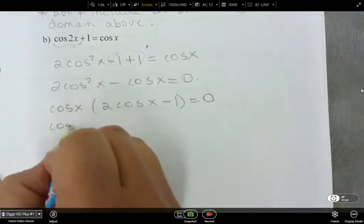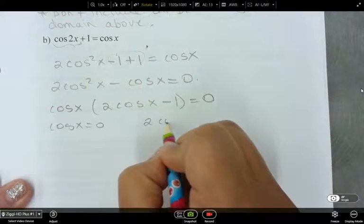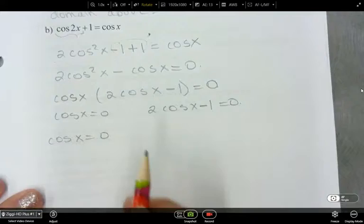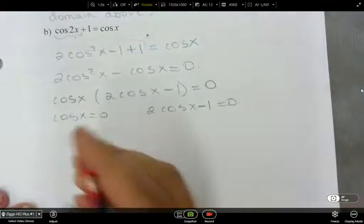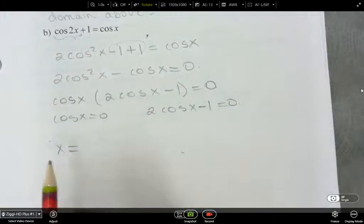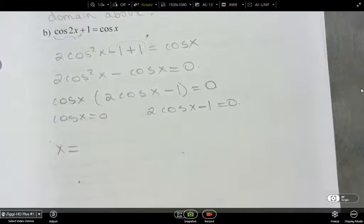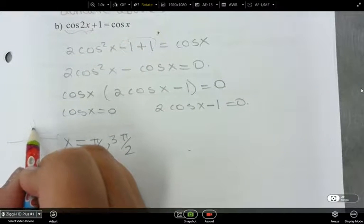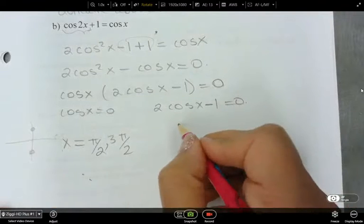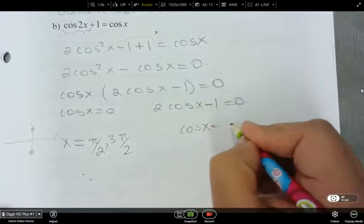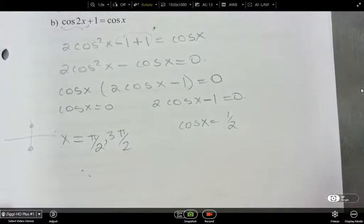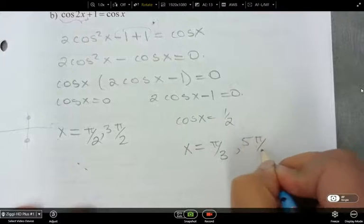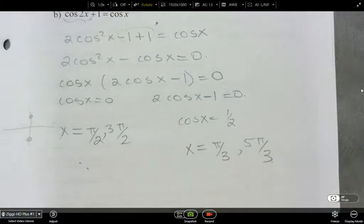Then I've got cos x equals 0 and 2 cos x minus 1 equals 0. Where is cos x 0? What solutions of x is gonna make cos of x equals 0? Pi by 2 and 3 pi by 2. So I just look over here. My x values are 0 here and here. And for this one here, it ends up being cos x equals 1 half. And we've solved that about 3 times already in this lesson. So x is equal to pi by 3 and 5 pi by 3.